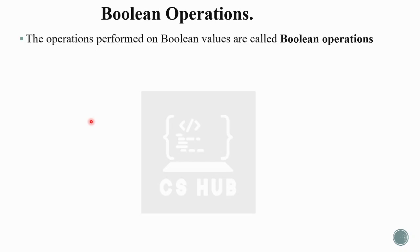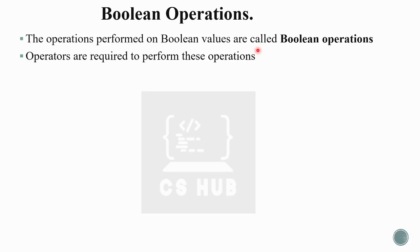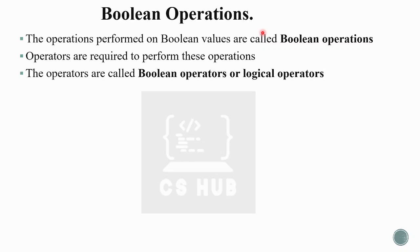The operations performed on Boolean values are called Boolean operations. The operator performs an operation on operands — for example, in a plus b, plus is the operator and a and b are the operands. Boolean operations use Boolean operators, also called logical operators.